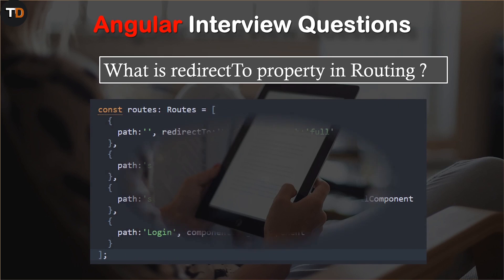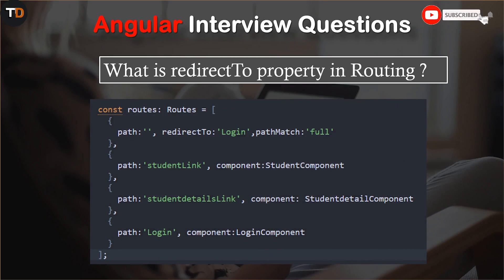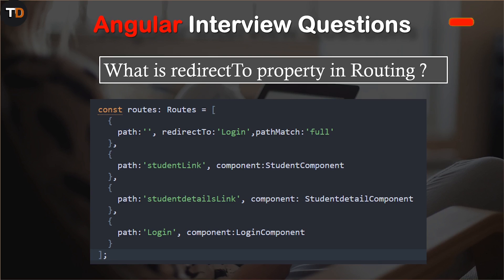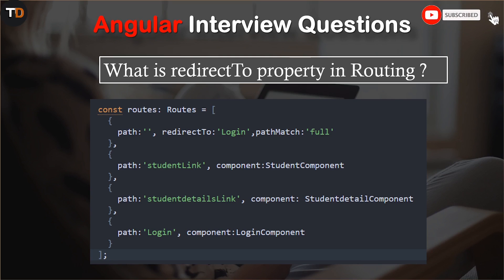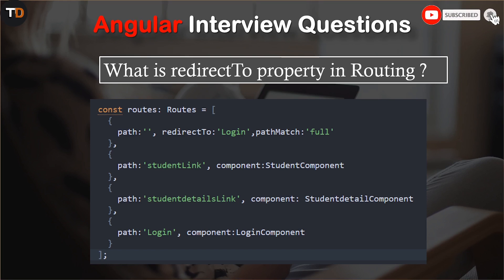Let's look at an example. In this example we are defining the routes. If you see the first route, we are defining the path — there is no path and we are redirecting to the login path. The last route assigns 'login' to the path, so it will reflect to that last route and load the login component.